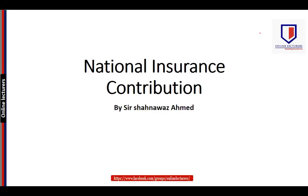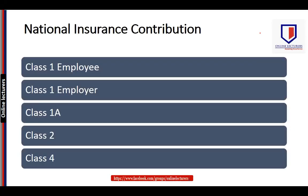In this lecture we are going to discuss the rules of National Insurance Contributions, that is NIC. NIC is applicable both on employment income as well as on self-employment income, and NIC is to be paid by both employer as well as employee. There are five types of NIC that are examinable. The first one is Class 1, paid by the employee, and the second is Class 1, paid by the employer — both based on gross earnings.